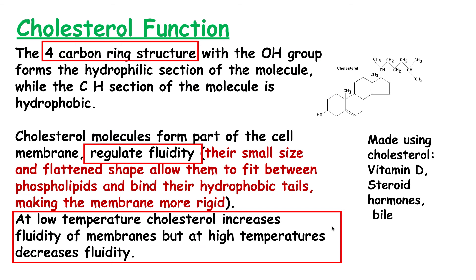Now cholesterol — we need to know what it does but we don't need to know its structure. In an exam they may ask you to compare the structure of a triglyceride or phospholipid to cholesterol, but you just use your knowledge of those molecules to make the comparison from the provided information. What we do need to know is that cholesterol is a four-carbon ring structure, and it is there to regulate the fluidity of the membrane. At low temperatures cholesterol increases the fluidity of a membrane, but at high temperatures it decreases the fluidity of the membrane.